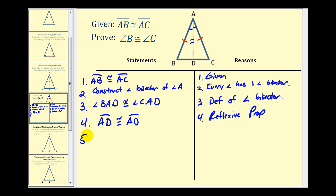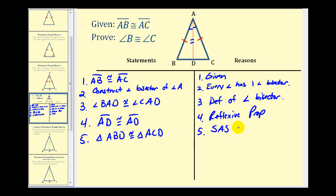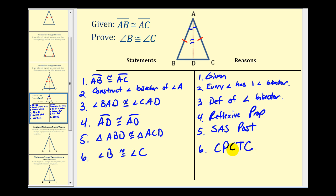Now we have enough information to state that the two small triangles are congruent to one another. We can say that triangle ABD is congruent to triangle ACD. Remember, these vertices must be listed in corresponding order. The reason for this is the Side-Angle-Side postulate. And since these two triangles are congruent, we can conclude that angle B is congruent to angle C — the reason being corresponding parts of congruent triangles are congruent, or CPCTC.